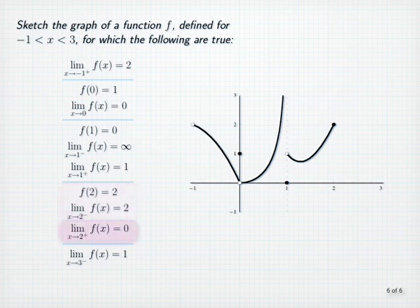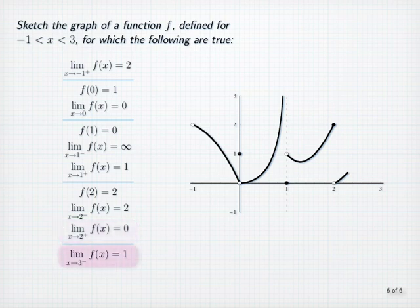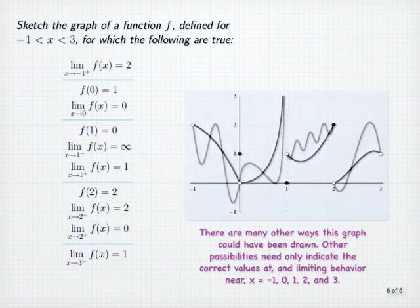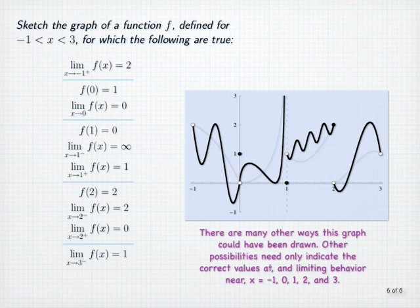Now, since the right-sided limit as x approaches 2 is 0, we continue the graph past 2 like this, and finally we finish the graph making use of the fact that the limit as x approaches 3 from the left is equal to 1. There are many other ways that this graph might have been drawn. Other possibilities need only show the correct values and limiting behavior at x equals negative 1, 0, 1, 2, and 3. In particular, this is another possibility where the graph wiggles around a bit more between those values of x.